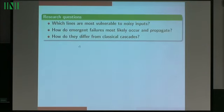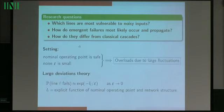The main questions we would like to answer with this framework are: which lines are the most vulnerable to these noisy inputs? And then, if these failures happen, how do they happen most likely? And finally, what's the main difference between the two models — the classical and this emergent model? We're going to answer these questions using large deviation theory.